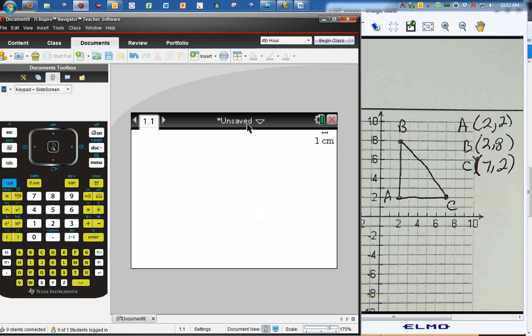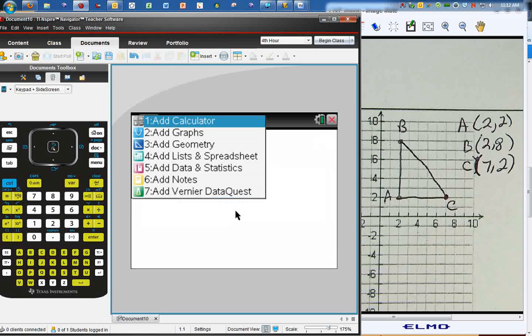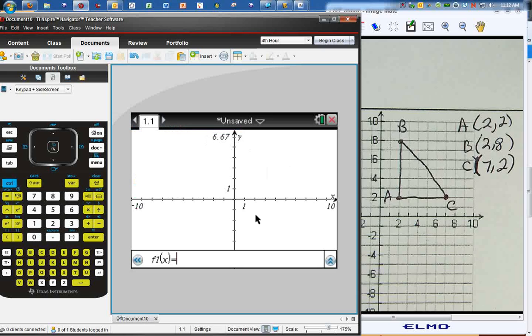Sometimes you need to create a shape like the triangle ABC here in a coordinate plane, and we can do that in our calculators. So I always want to start off with a new document so we don't have any other stuff in there. And what you want to do is you want to go to graphs because the graph is the coordinate plane itself.